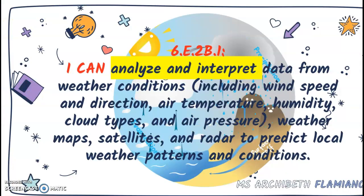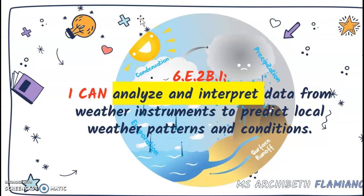For today's standard, 6E2B.1: I can analyze and interpret data from weather conditions, including wind speed and direction, air temperature, humidity, cloud types and air pressure, weather maps, satellites and radar to predict local weather patterns and conditions. This is basically the entire standard, so we wanted to deconstruct that to show our focus of study today. Our ICANN statement: I can analyze and interpret data from weather instruments.